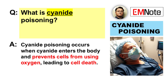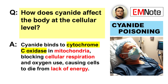Let's begin with the basics. What exactly is cyanide poisoning? Cyanide poisoning occurs when cyanide enters the body and prevents cells from using oxygen. This essentially halts cellular respiration, leading to rapid cell death. How does cyanide affect the body at the cellular level? It binds to cytochrome C oxidase in the mitochondria, disrupting the electron transport chain. This prevents cells from utilizing oxygen, even when it's adequately delivered, and leads to energy failure and cell death.